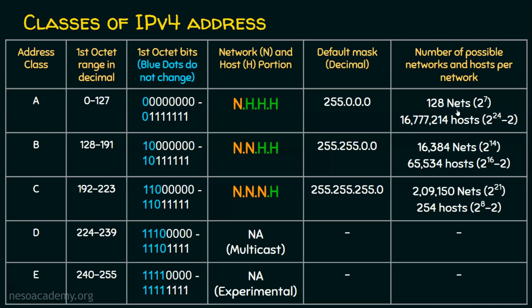In each network we have a huge number of hosts. The host portion spans 3 octets, and each octet is 8 bits, so we have 24 bits total. Therefore 2 to the power of 24 is 16,777,216. When we subtract 2, we get 16,777,214 usable hosts possible — meaning we can use 16,777,214 IP addresses for our hosts. Such a big network it is!